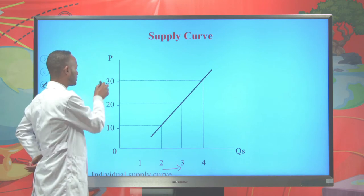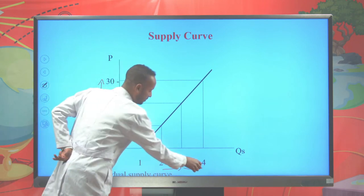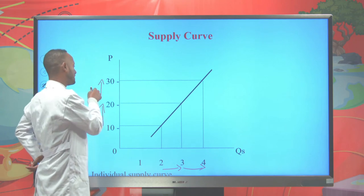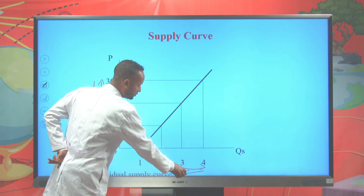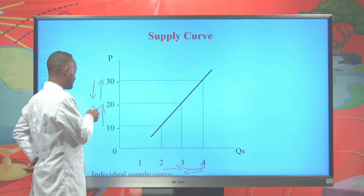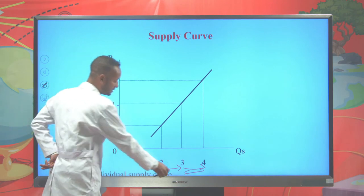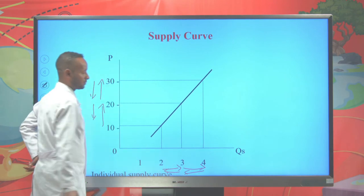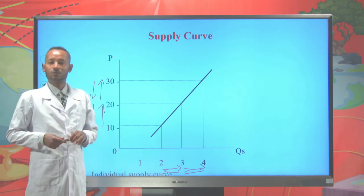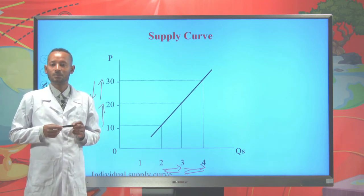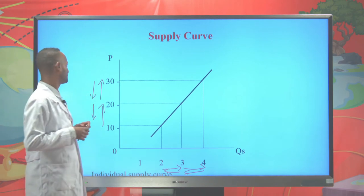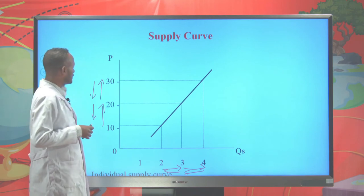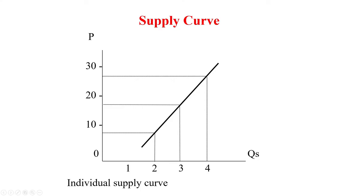As price increases from 20 to 30, quantity supplied also increases from 3 kilograms to 4. And conversely, as price declines from 30 to 20, quantity supplied will decline from 4 kilograms to 3. And as price declines from 20 to 10, quantity supplied declines from 3 to 2. So from this, we can see there is a direct relationship between the price of a commodity and quantity supplied. As a result, the slope of the supply curve is positive, due to the direct relationship between price and quantity supplied.